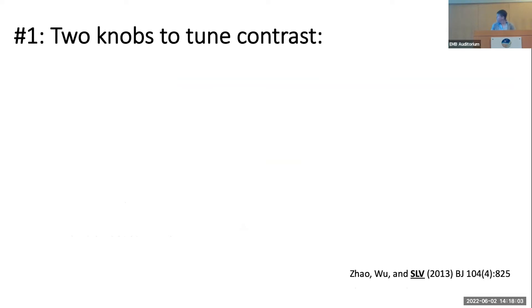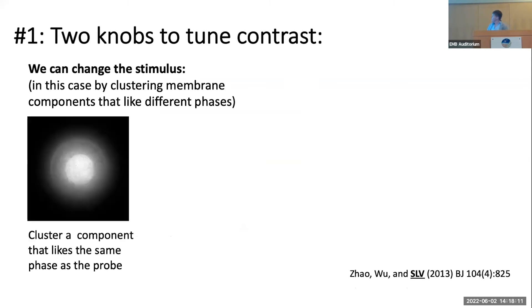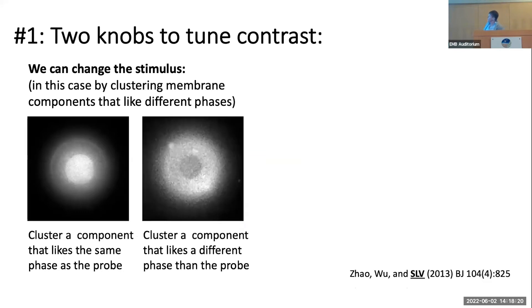Once we have this system, we can tune it in a couple of different ways. One thing we can do is change the stimulus — in this case the things we've clustered into this domain. We could cluster a component that likes the bright phase and make a bright domain, or cluster something that likes the dark phase and make a dark domain. This is the external perturbation.